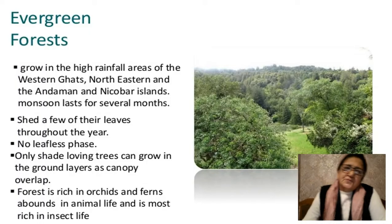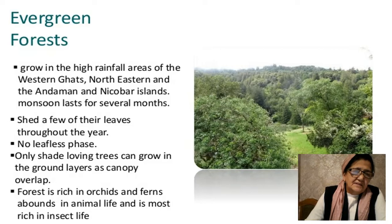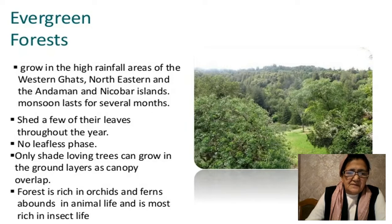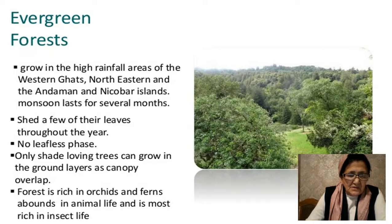Tropical evergreen forests: the monsoon lasts for several months. These forests shed a few of their leaves throughout the year with no leafless phase. All shade-loving trees can grow on the ground, and layers of the canopy overlap. The forest is rich in orchids and ferns, abounds in animal life, and is most rich in insect life.